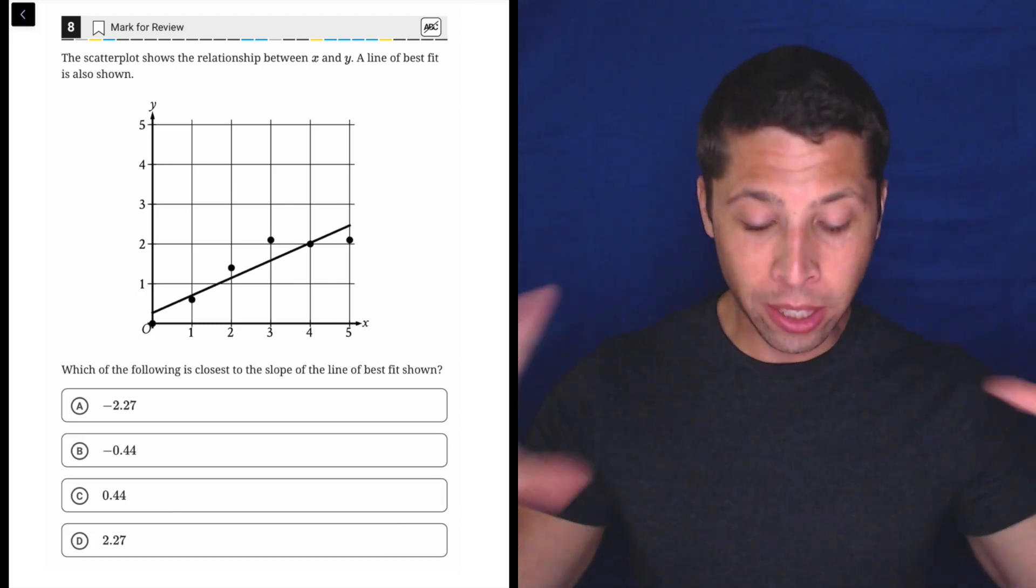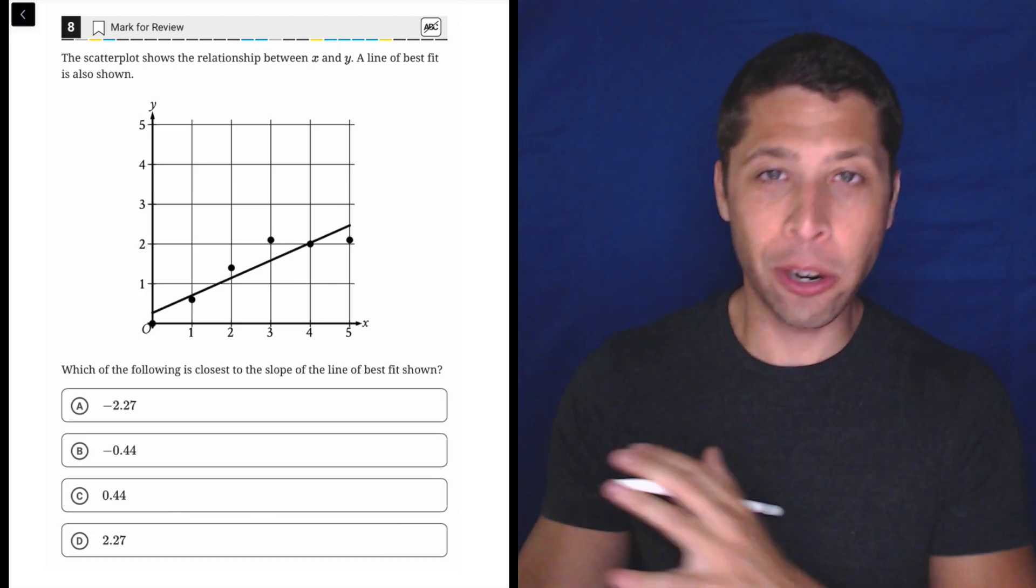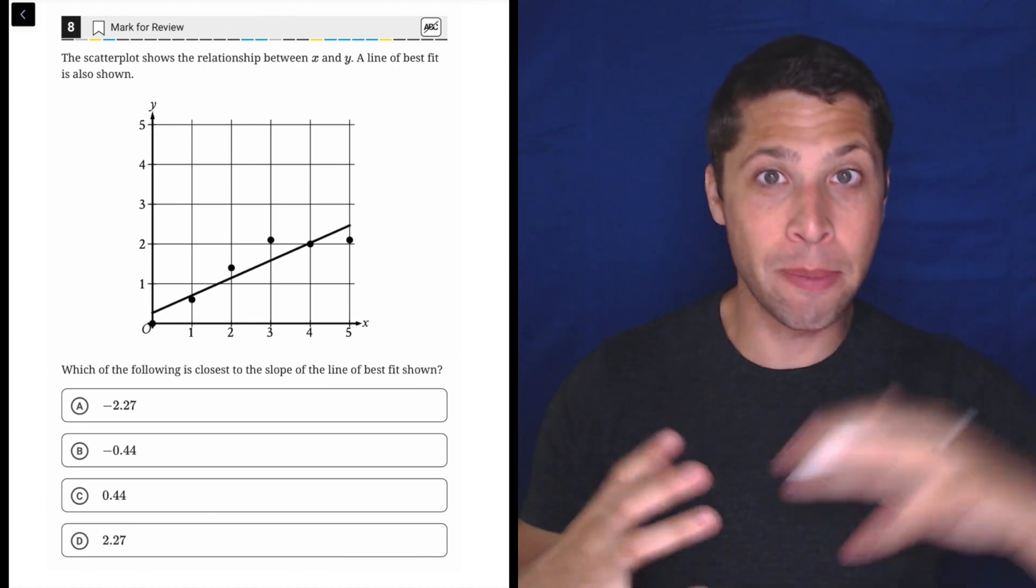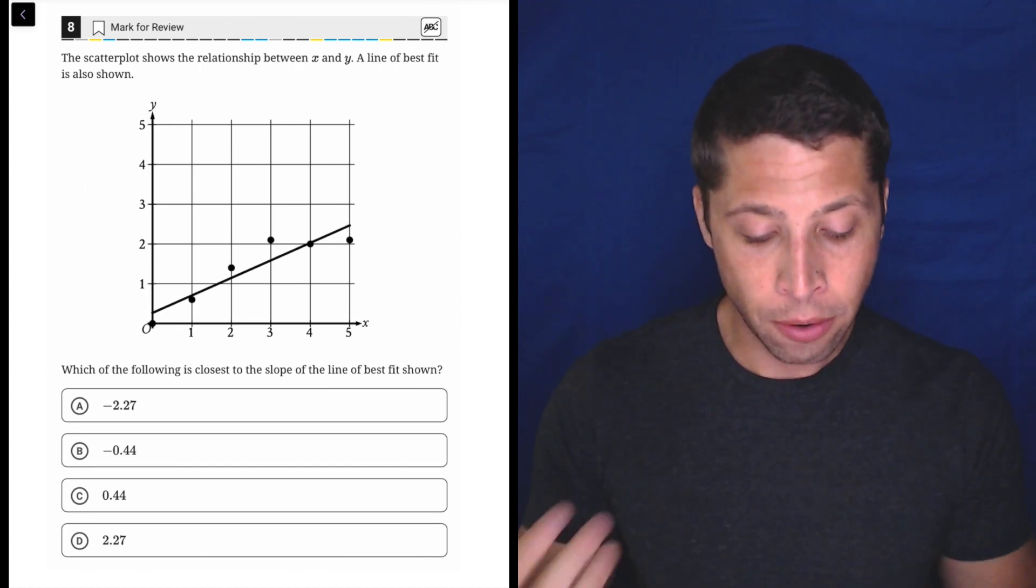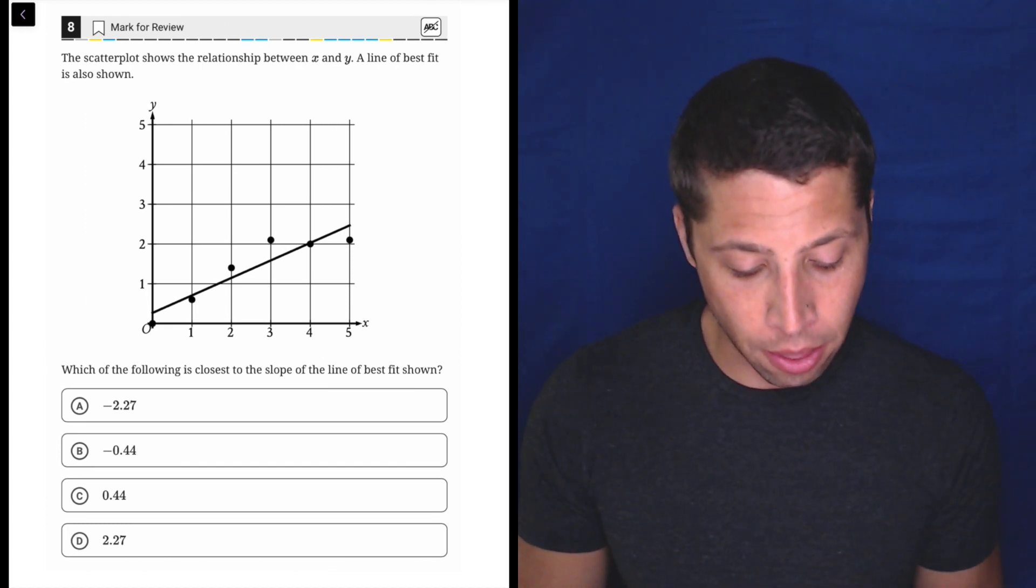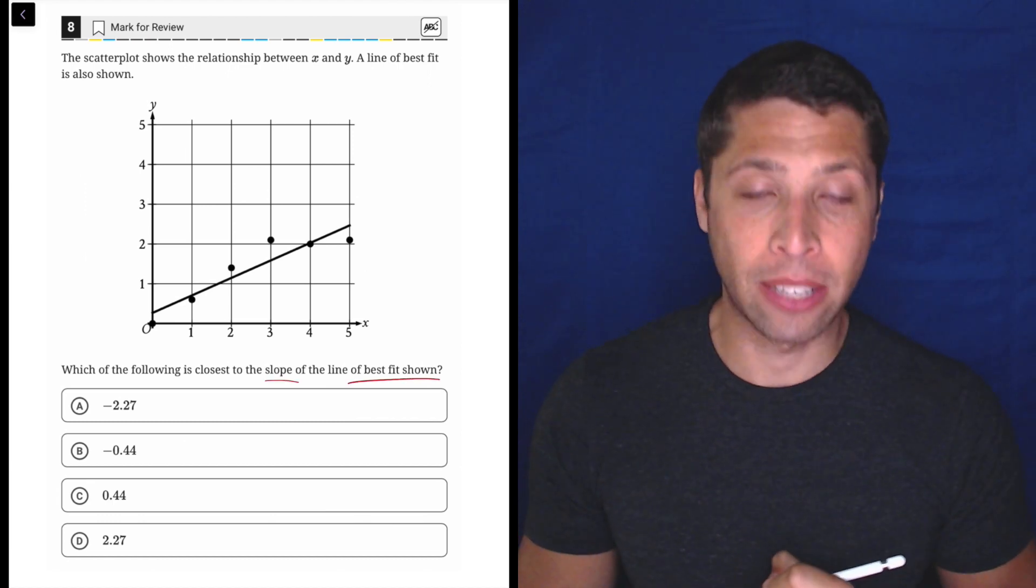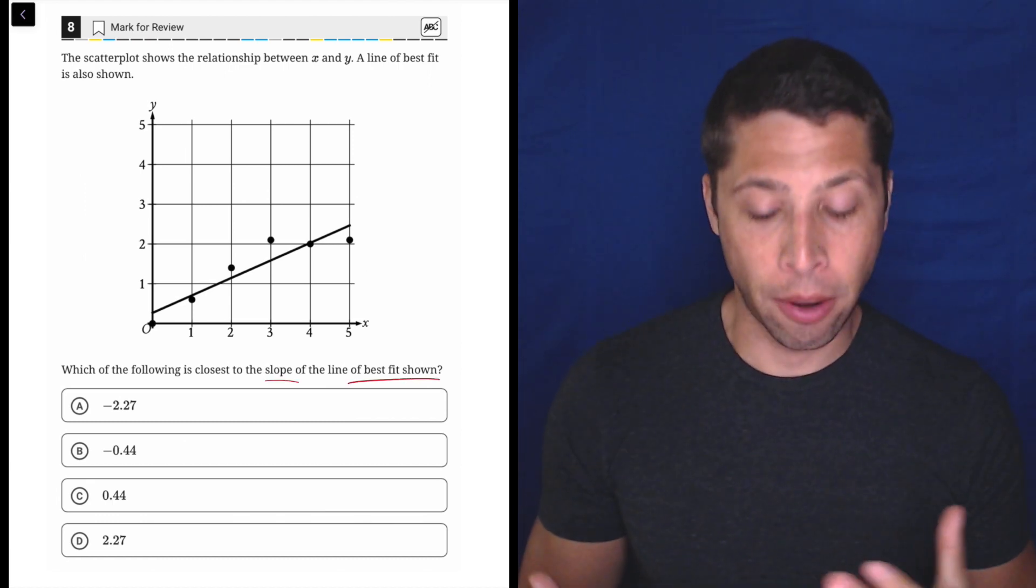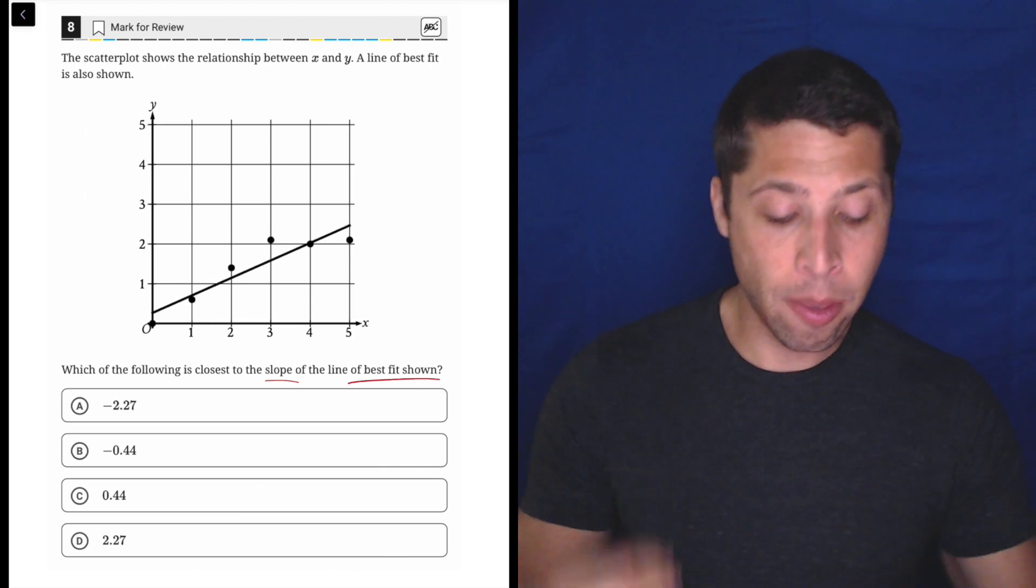All right, let's talk about a few really good ideas for this question. It's not a hard one, but it brings in a lot of things that might be really important on future questions. First of all, they're asking for the slope of the line of best fit, but they've given us a scatter plot, right?